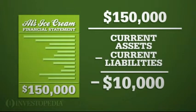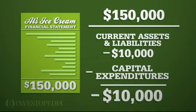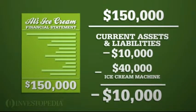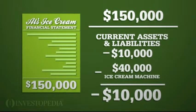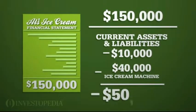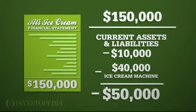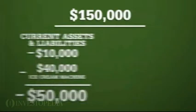The change in net working capital equals $10,000, and his capital expenditures were $40,000 for a new ice cream machine. These numbers represent the cash that went out of the business.